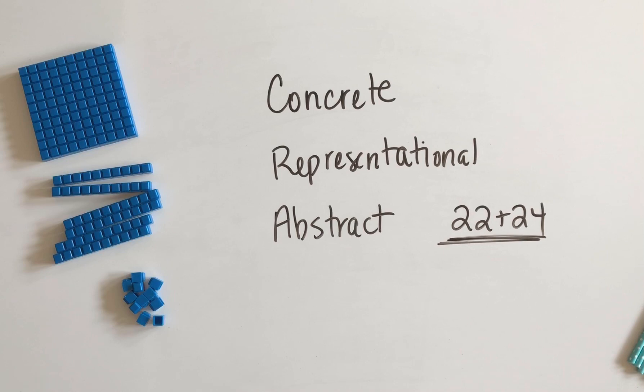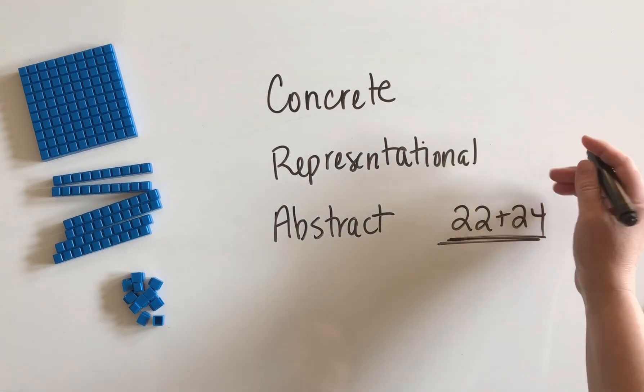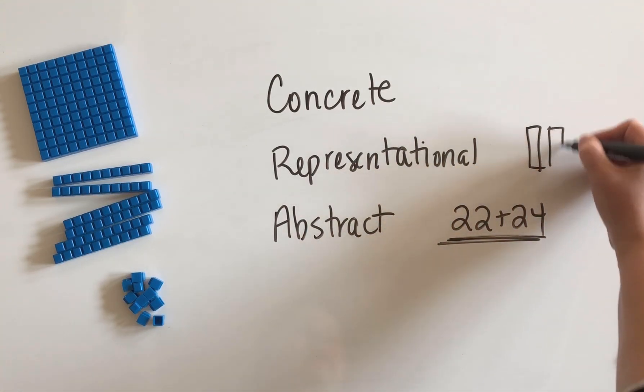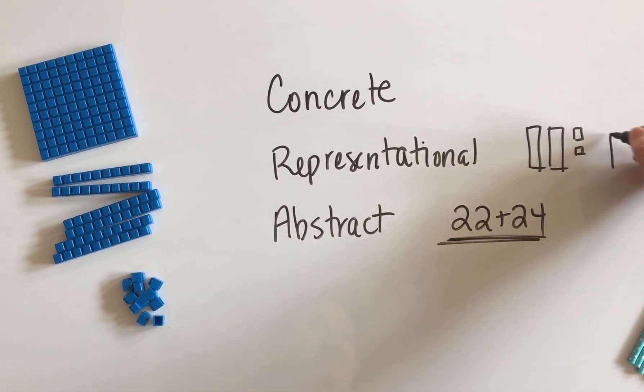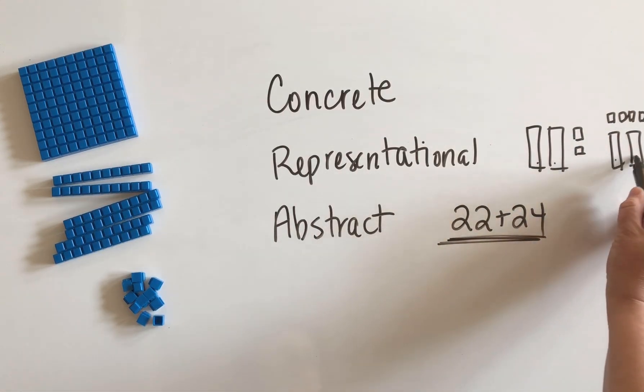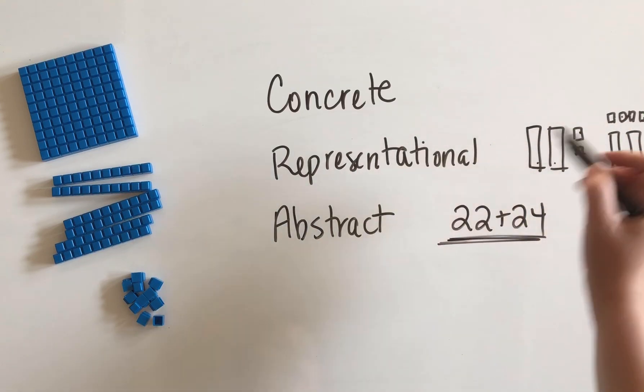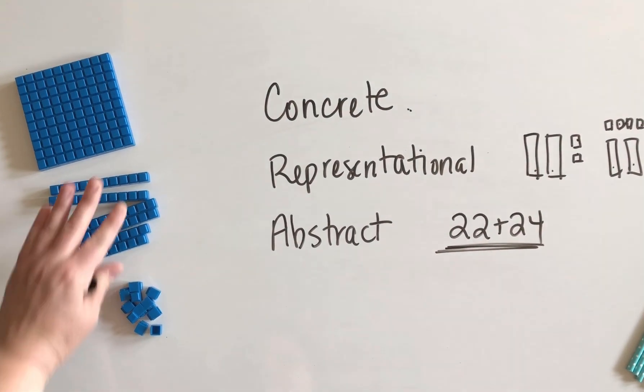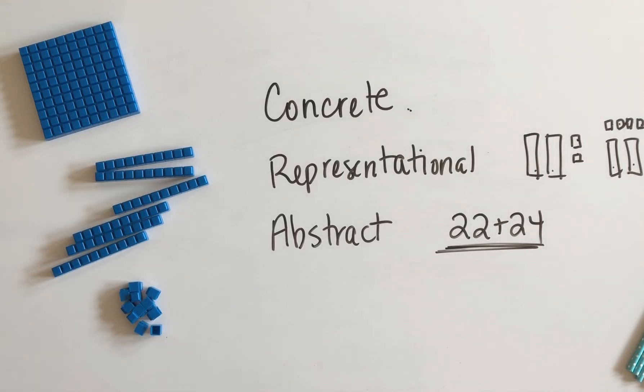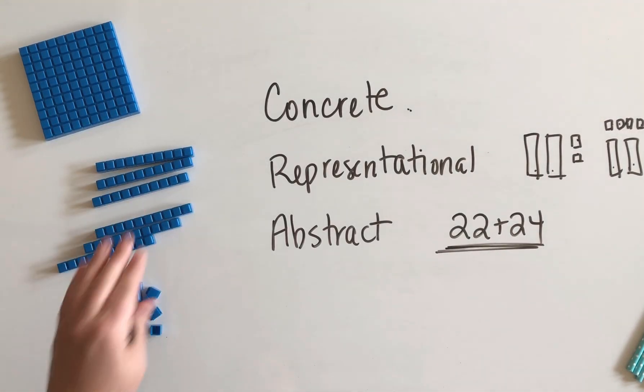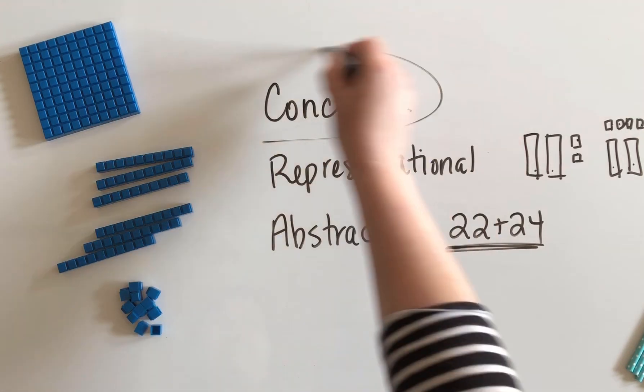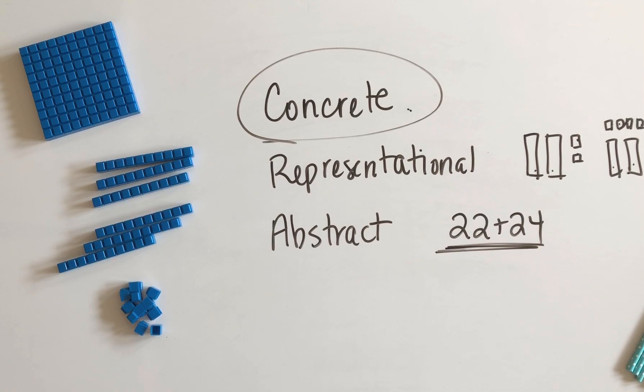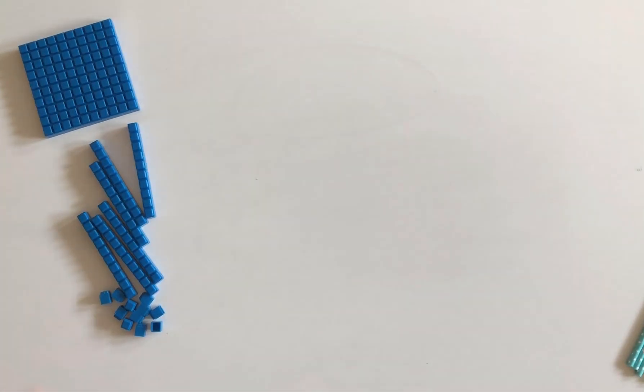Representational refers to drawing. So they could draw a representation of the base 10 blocks. So if you have 22 plus 24, they might represent that like this: 22 and then 24, and then they can count those up 10, 20, 30, 40, 41, 42, 43, 44, 45, 46. Concrete is the stage where we are actually working with our hands and manipulating objects and able to easily use them to visualize what the numbers mean. So base 10 blocks are amazing for the concrete phase of math. So that was just a little explanation of why we do this.